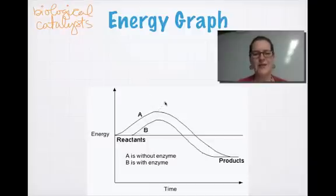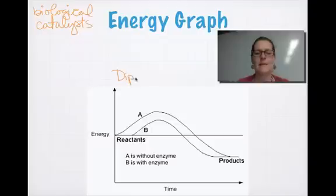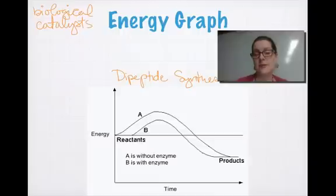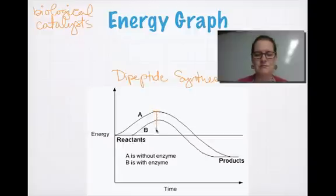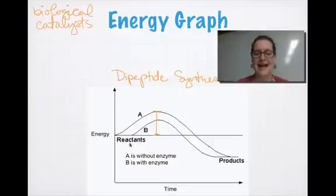Here's what that means. Suppose you have a reaction — dipeptide synthesis. You already know that the chemical reaction that takes place between two amino acids to form a dipeptide is called a dehydration reaction. In a test tube without any enzyme, it's going to take this much energy before you have your dipeptide. My reactants are two amino acids, and my product is a dipeptide.